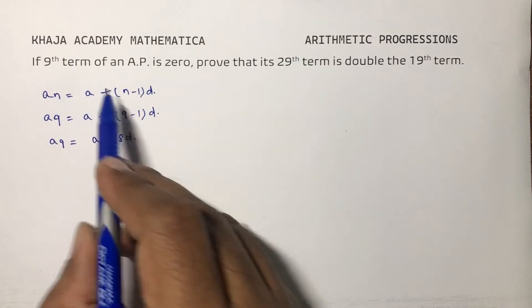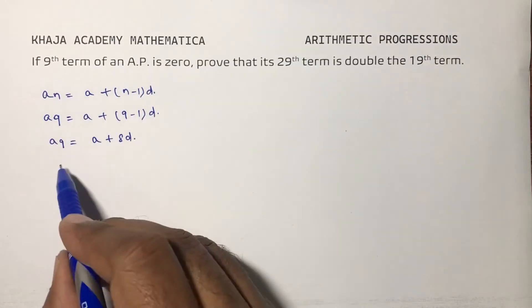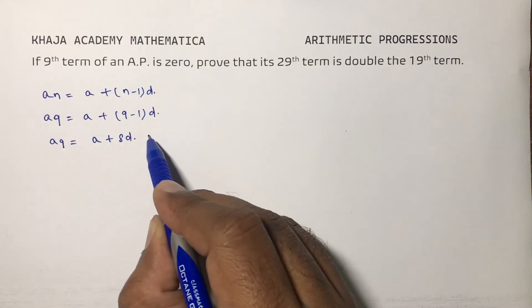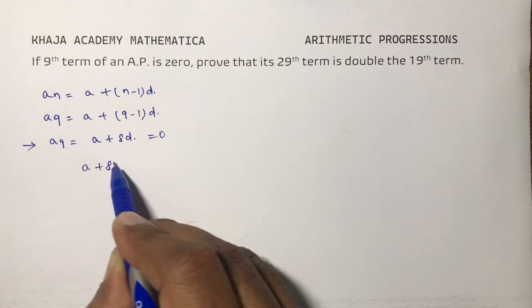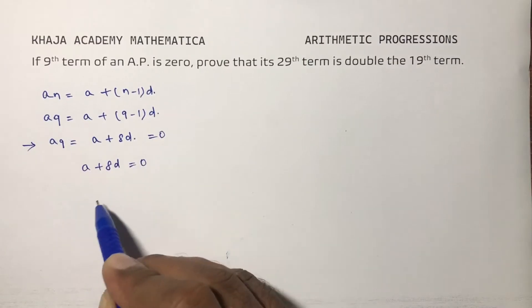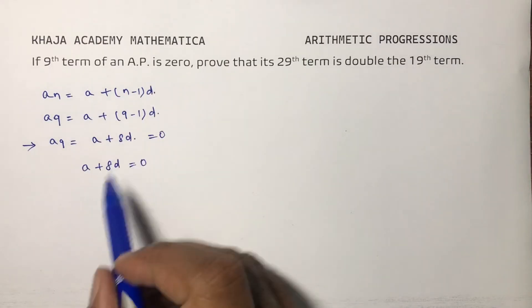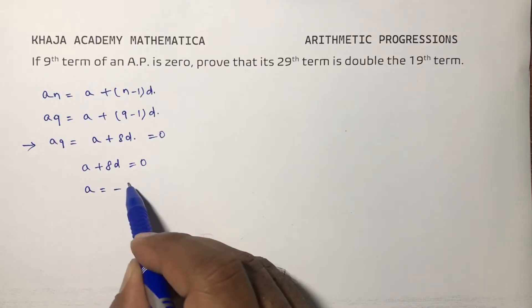A9 is A + 8D. But they told 9th term of an AP is 0, so you can write this equal to 0. A + 8D equals 0. Since 9th term of an AP is 0, you can write A equals -8D.